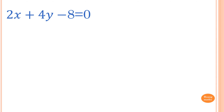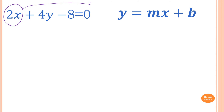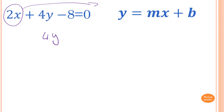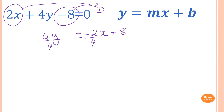Last question: 2x plus 4y minus 8 equals zero — it's not in gradient-intercept form. We must rearrange it to identify the gradient and y-intercept. Move 2x to the right side and move the minus 8 across as well, giving 4y equals something. So: 4y equals minus 2x plus 8. Then divide everything by 4.